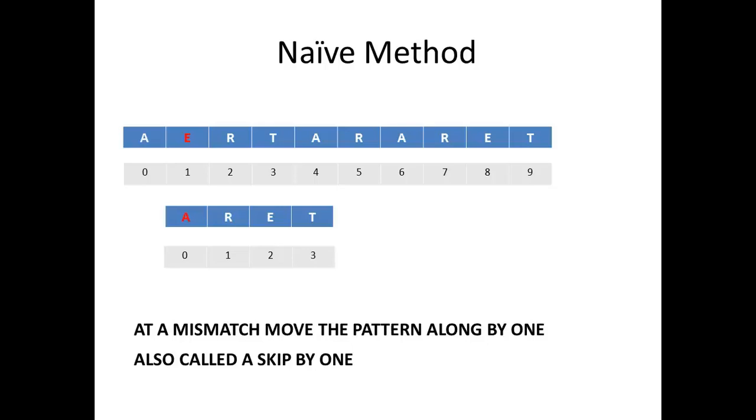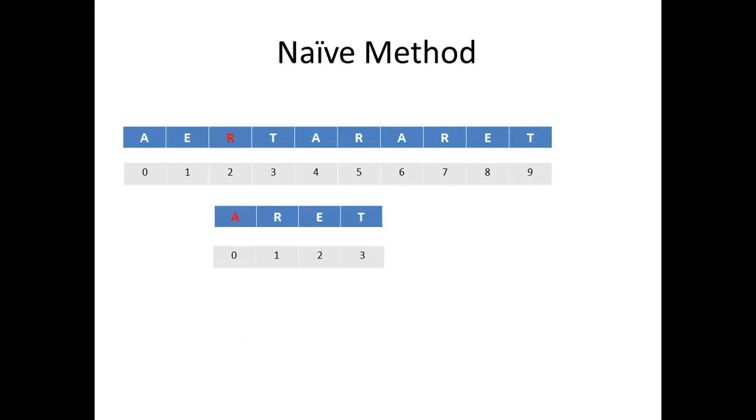So here, E and A give a mismatch, so we will move along by one. R and A give a mismatch again, T and A give a mismatch, so we move along by one.